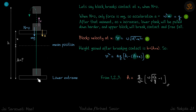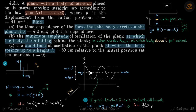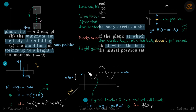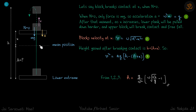Suppose the block loses contact at distance x from the mean position. From the lower extreme up to the mean position, normal reaction is always positive — the block never loses contact there. After the mean position, at some point N = 0, meaning the acceleration of the system equals g. So the first equation is: ω²x = g.